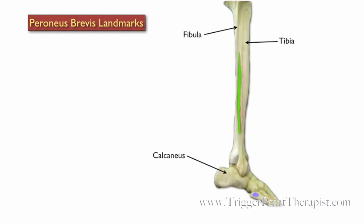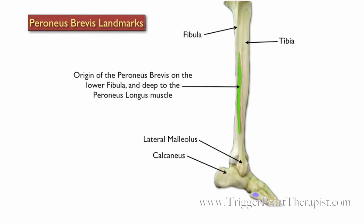Now we'll take a look at the Peroneus Brevis landmarks. We have the tibia, the fibula, the calcaneus, and in addition, we have the lateral malleolus. The Peroneus Brevis originates on the lower fibula and is deep to the Peroneus Longus muscle, and it inserts on the fifth metatarsal bone.